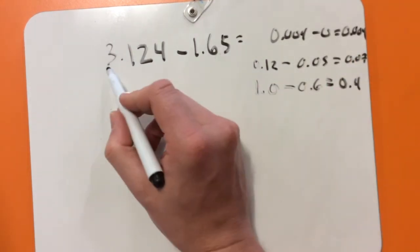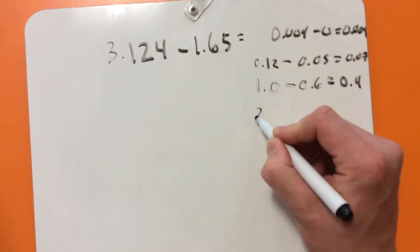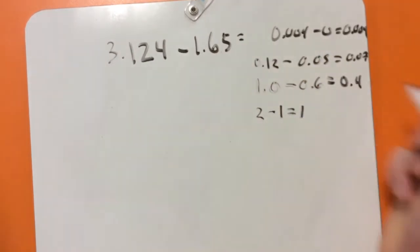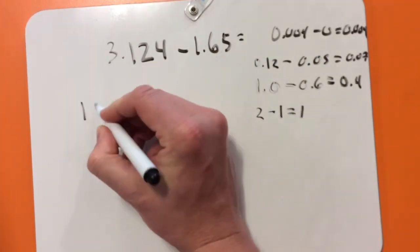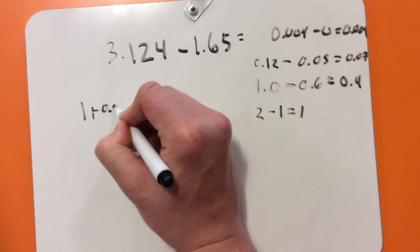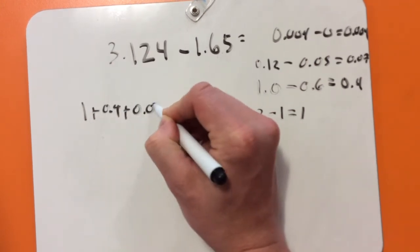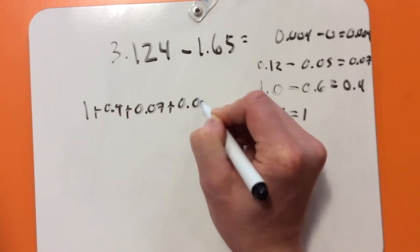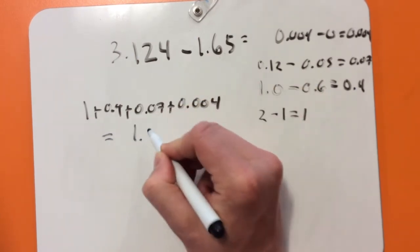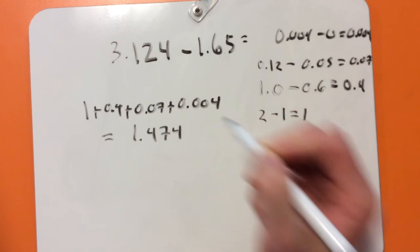And then I've taken 1 from there. So 2, take away 1, equals 1. Then I add it all up. 1, plus 0.4, plus 0.07, plus 0.004, equals 1.474.